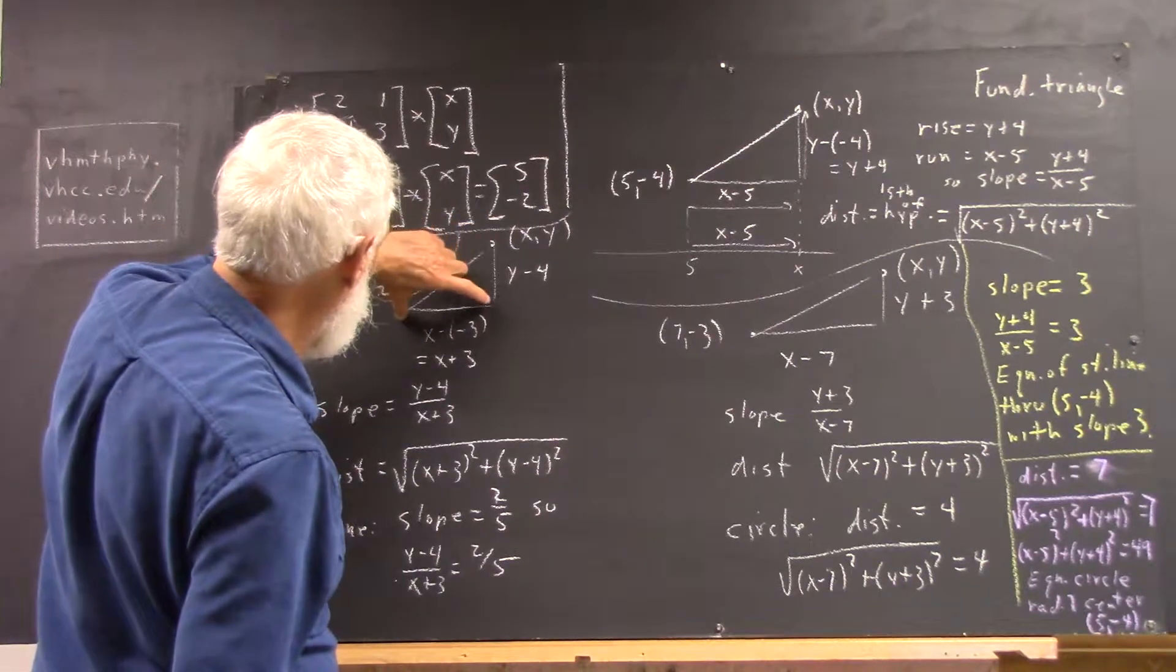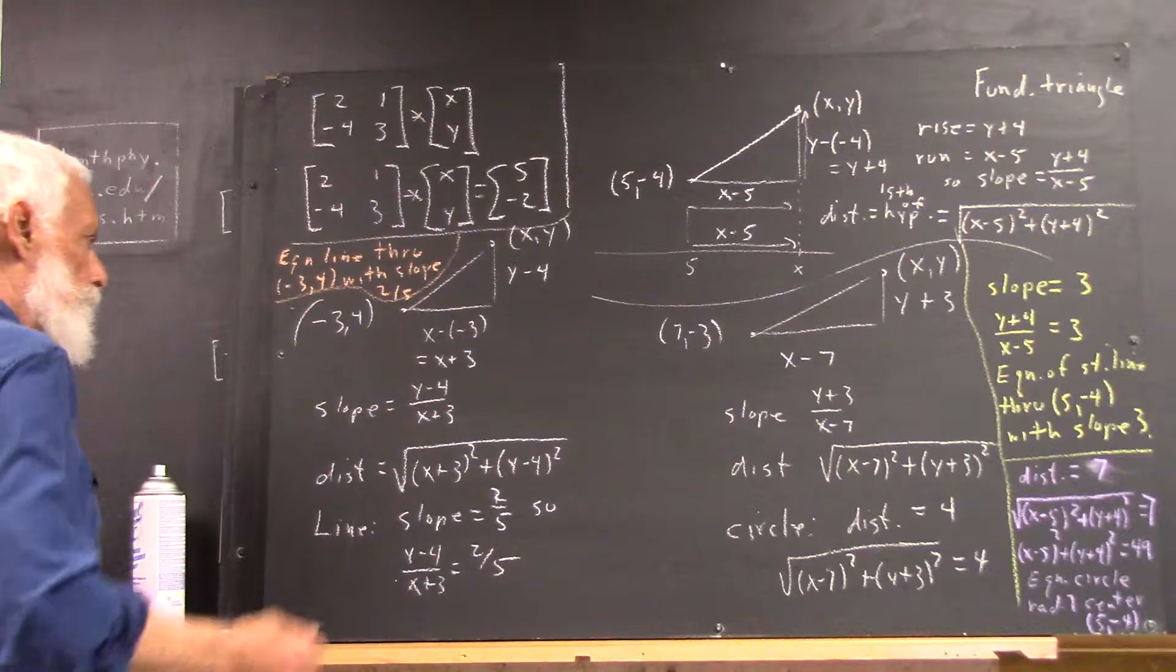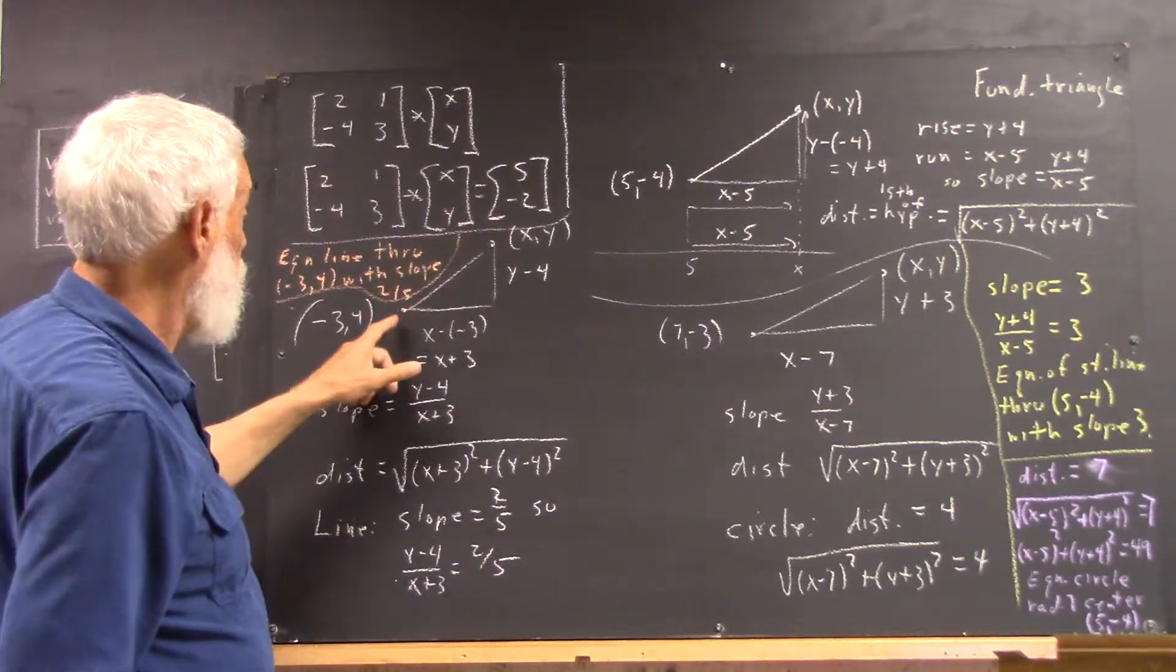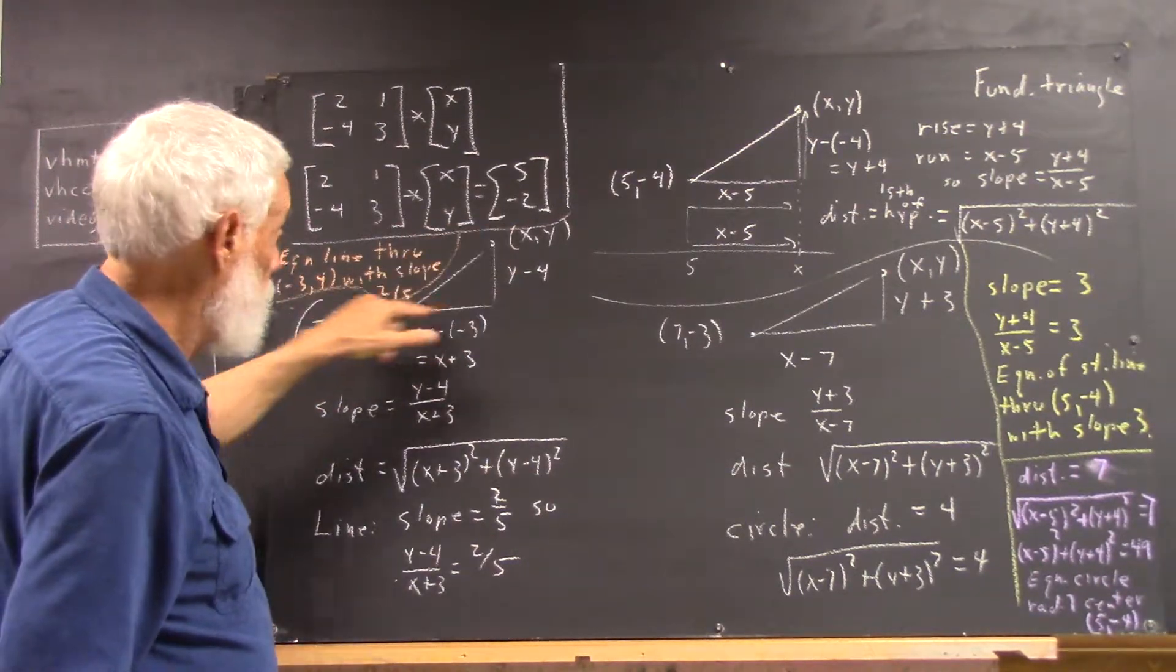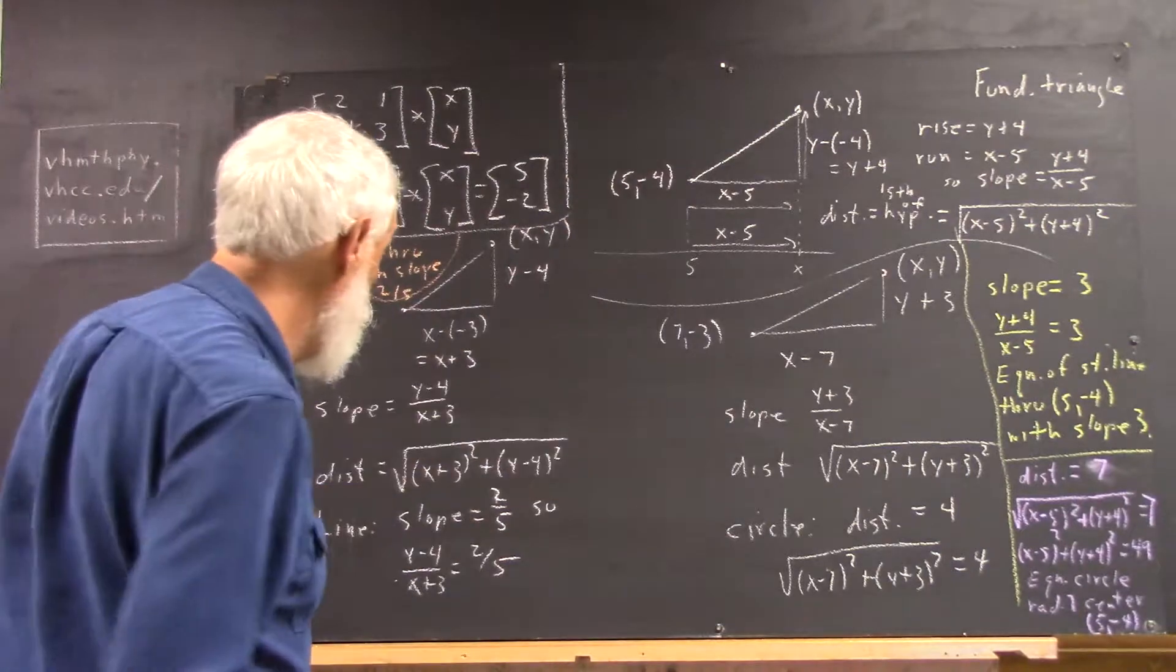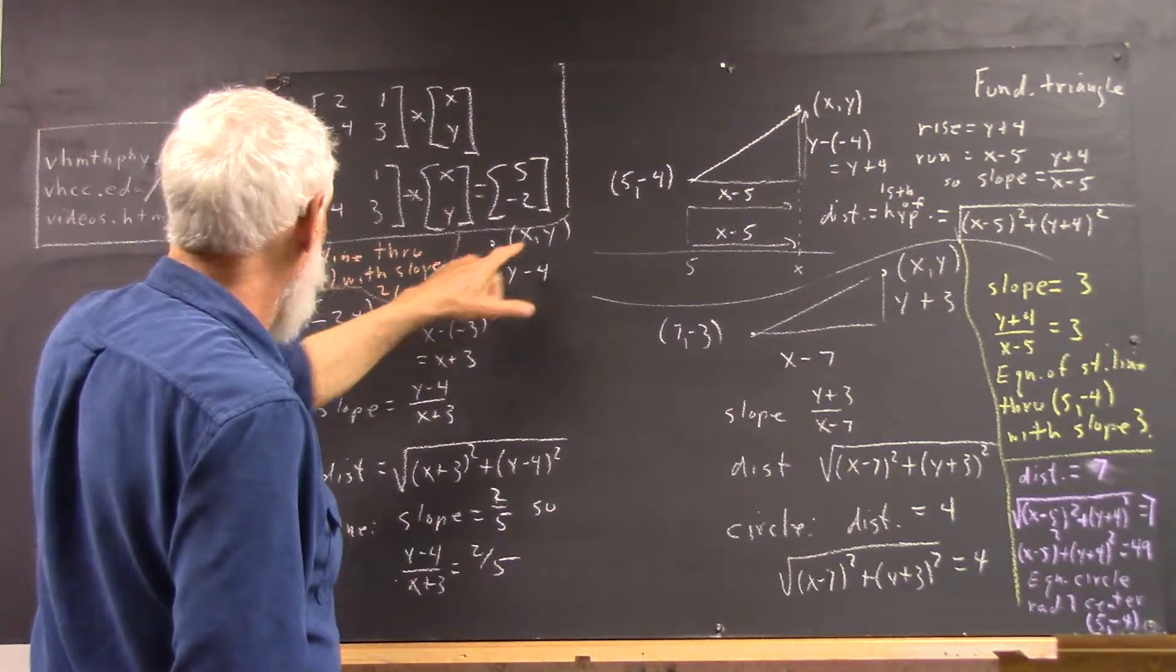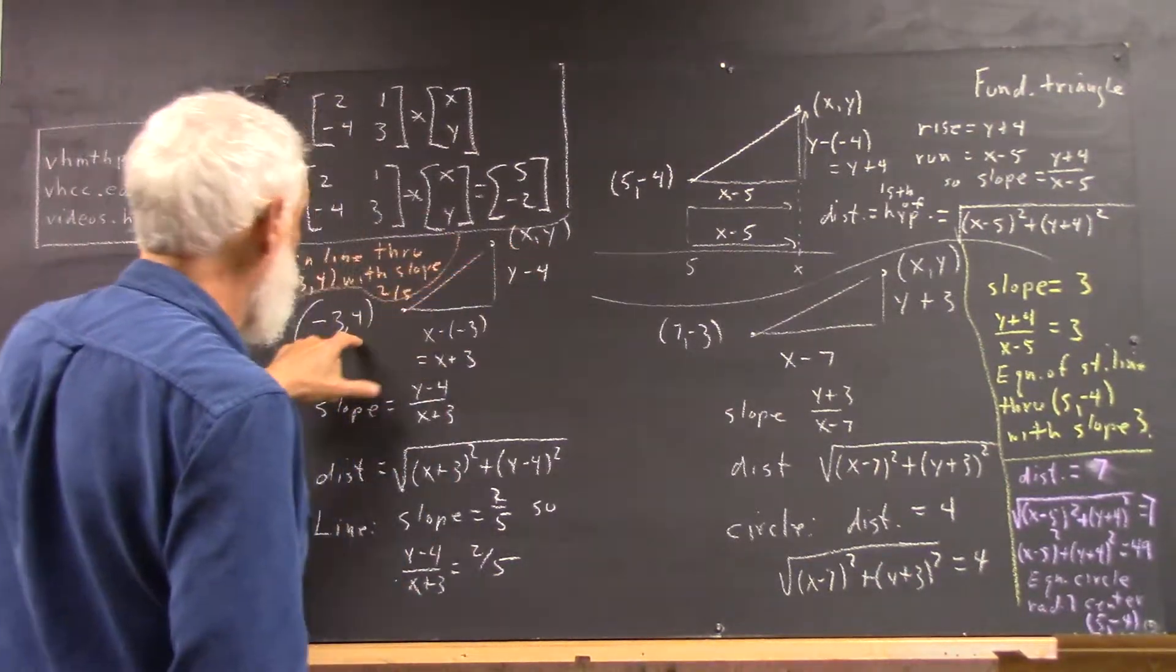So, this is not going to be completely accurate either. If that's 2, this looks more like 3, so the slope would be closer to 2 thirds. But, that's okay. So, what do we do? Once we've labeled, once we've put these points down, we draw the line here, and we complete the fundamental triangle, just like I did over here. And then, this side is x minus negative 3, which is x plus 3. And, this side is y minus 4.